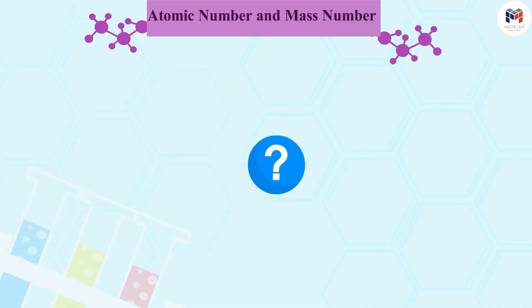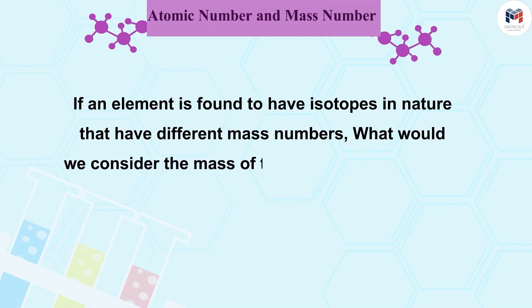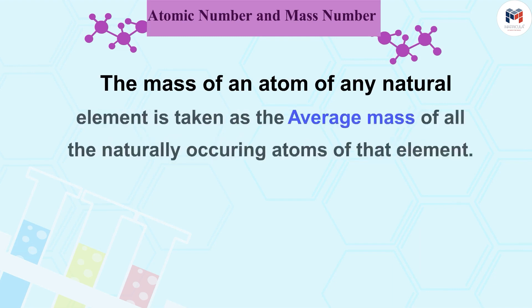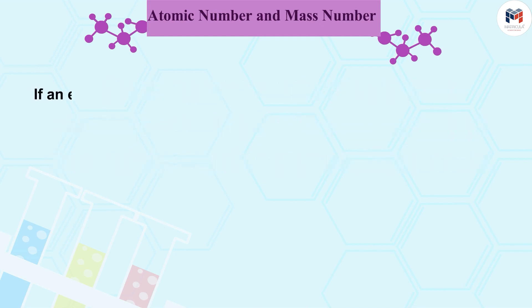But now you might be thinking that if an element is found to have isotopes in nature that have different mass numbers, what would we consider the mass of the atom of that element? Let's find it out. The mass of an atom of any natural element is taken as the average mass of all the naturally occurring atoms of that element.